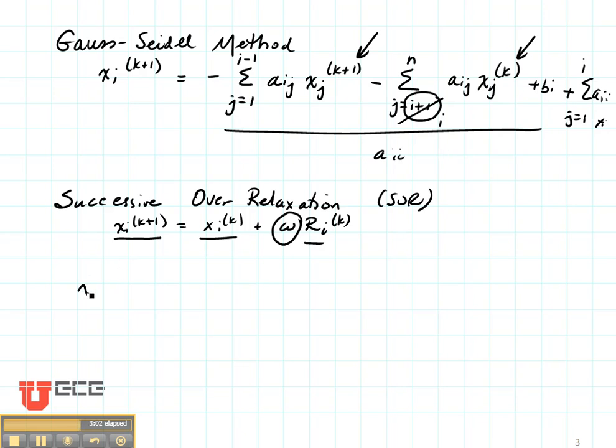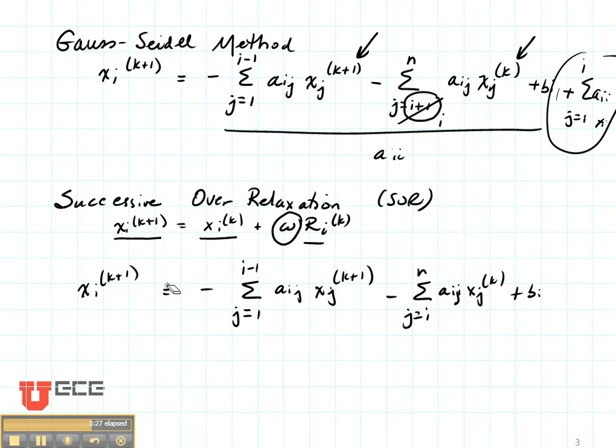So what I have here is X sub i of K plus 1 equals minus sum from j equals 1 to i minus 1 of Aij Xj of K plus 1, minus the sum from j equals i to N of Aij Xj of K, plus bi. And I'm going to bring this value out here to the front. And that's going to be X sub i of K.